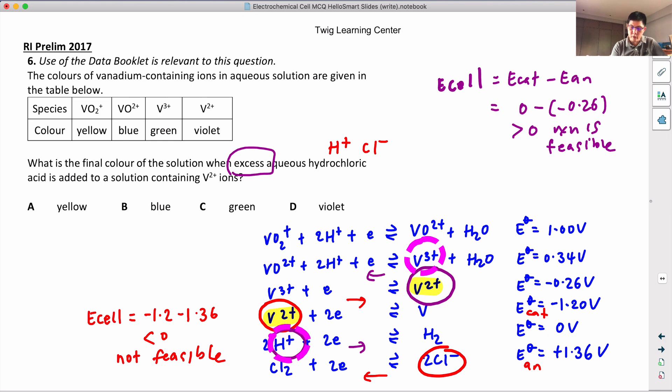Let's calculate my E-cell now with V3+ and H+. You will realize that E-cell will now be negative. So this one again will undergo oxidation, reduction and this one must undergo oxidation. 0 minus 0.34 is negative, so there's no reaction.